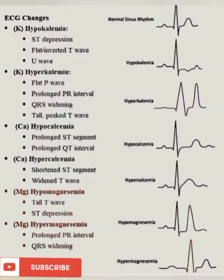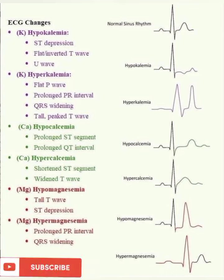The first ECG change is hypokalemia. In hypokalemia we'll see ST depression, flat inverted T wave, and U wave. For hyperkalemia we'll see flat P wave, prolonged PR interval, QRS widening, and tall peaked T wave.